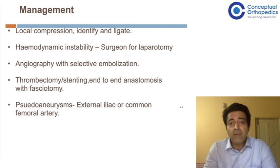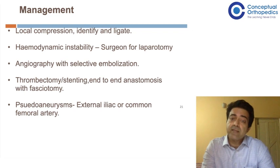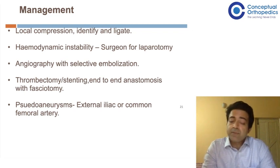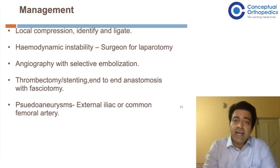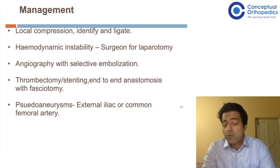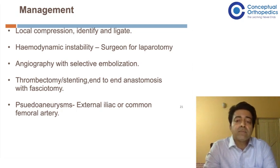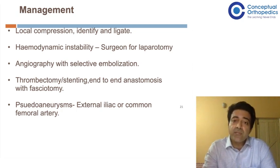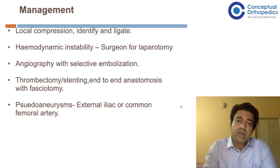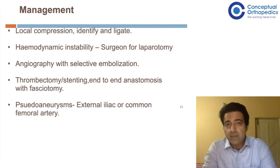Management of vascular injury includes local compression, identifying and ligating bleeders with clips or stitches on the table. If there is hemodynamic instability, call for a vascular surgeon. In certain cases, angiography with selective embolization may be needed, and in very few cases, thrombectomy, stenting, or end-to-end anastomosis may be required.